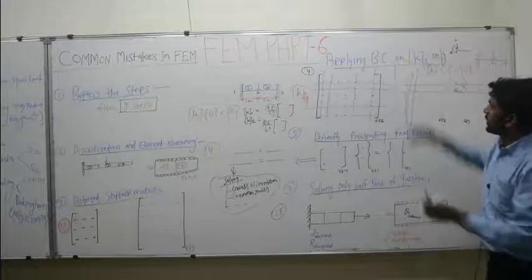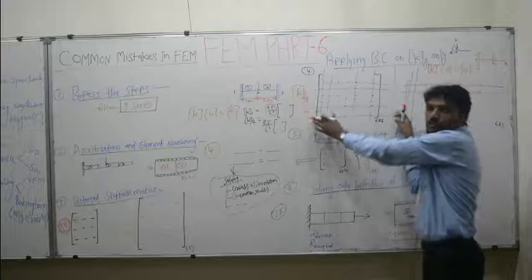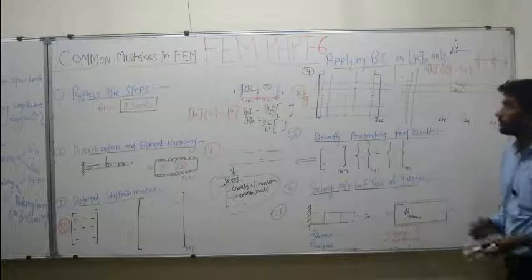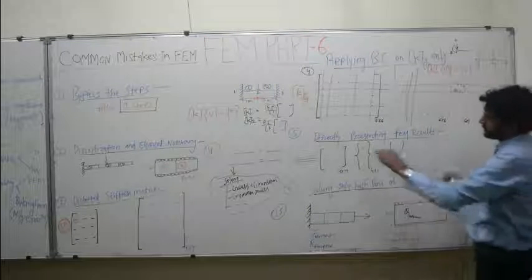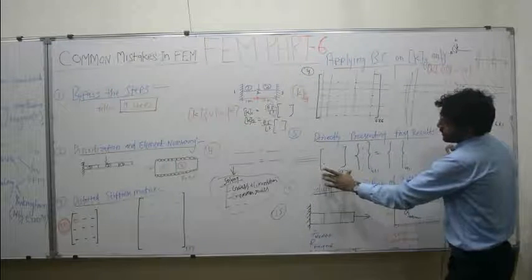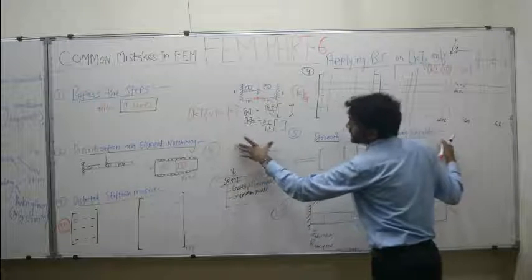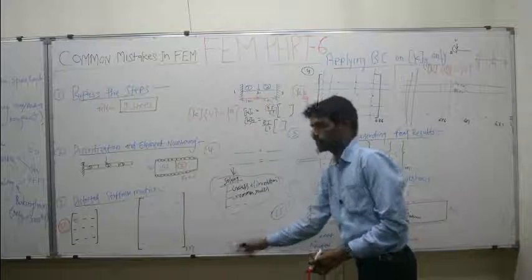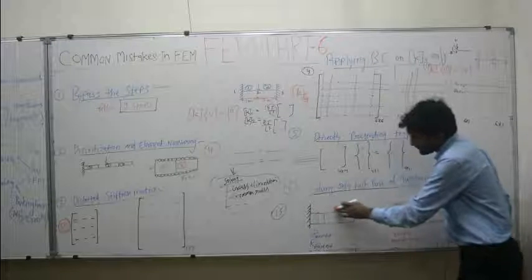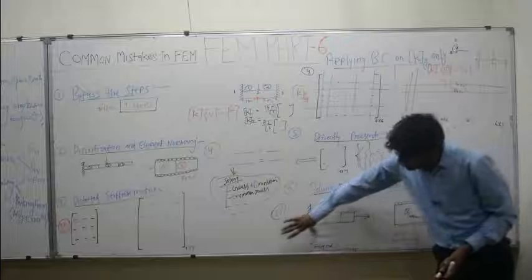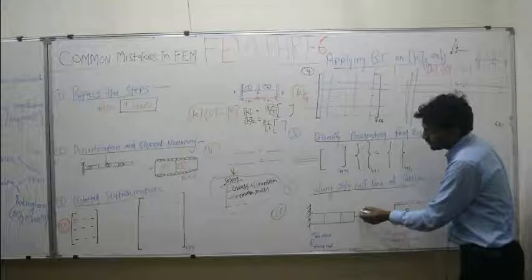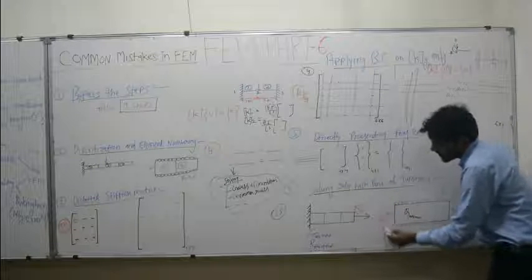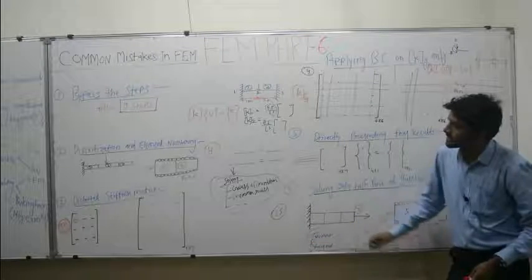For applying boundary condition on KG only — do not repeat this mistake, because you cannot apply boundary condition on K_global alone; you need to apply it on the full equation KU = F, eliminating rows and columns where U = 0. For directly presenting final results, always explain how you derived the equations, mention which method you used, give at least 3 or 4 steps, then present your results. For solving only half the question, make sure you check whether secondary variables are also required and complete all primary and secondary variables.